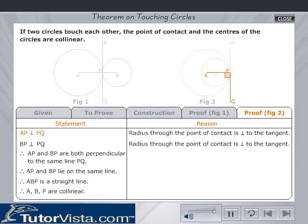AP is perpendicular to PQ and BP is perpendicular to PQ, since the radius through the point of contact is perpendicular to the tangent. Let AP perpendicular to PQ be equation 3. AP and BP are both perpendicular to the same line, PQ.